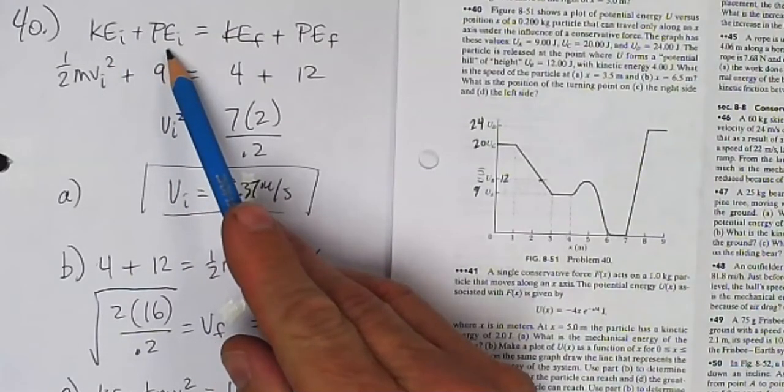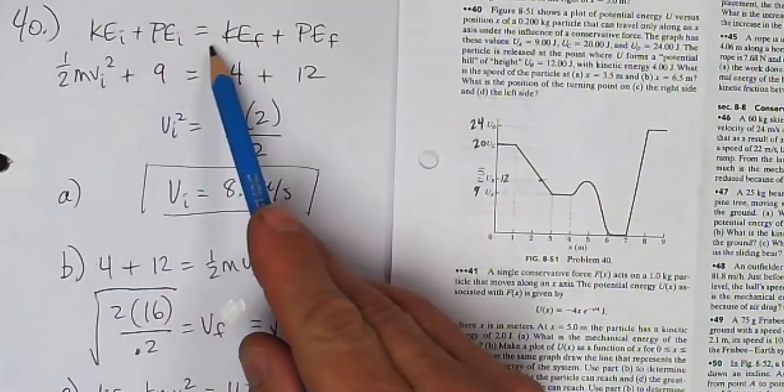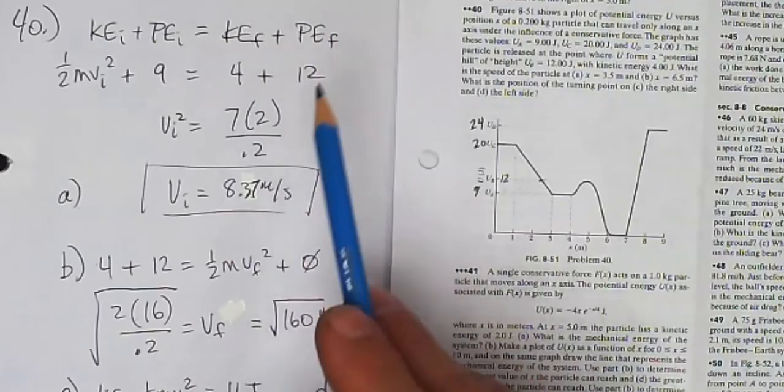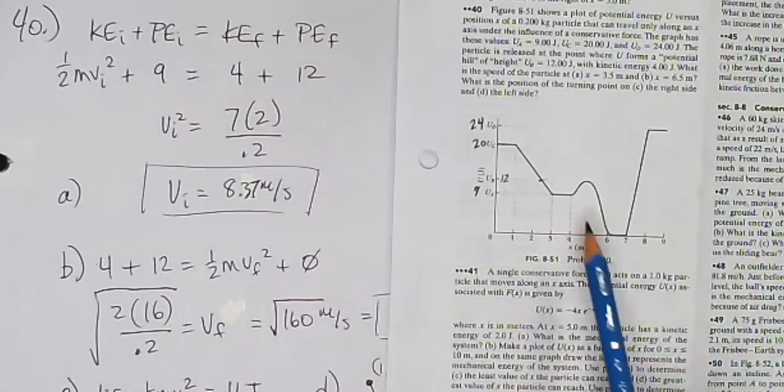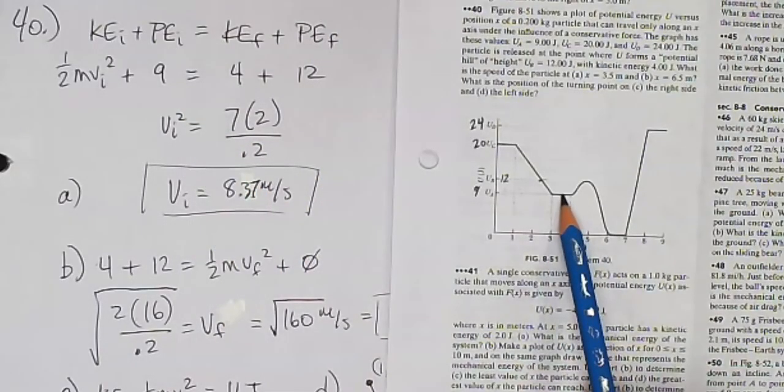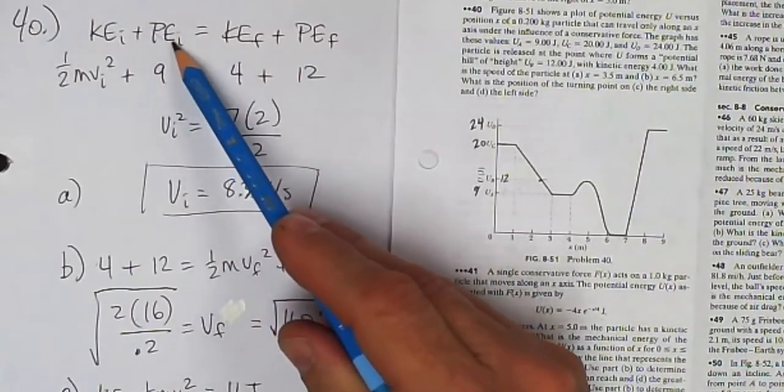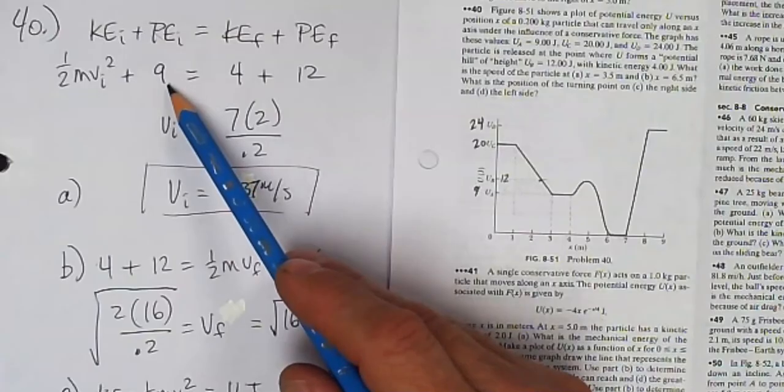K plus U or potential energy at some time point is equal to the K plus U at another time point. So at the point in question, 3.5, I know I have 9 joules of potential energy. So my potential value is 9 and we're trying to find the velocity at that point.